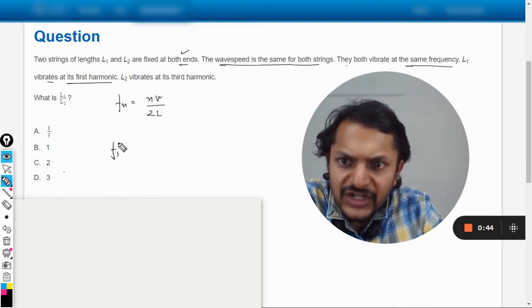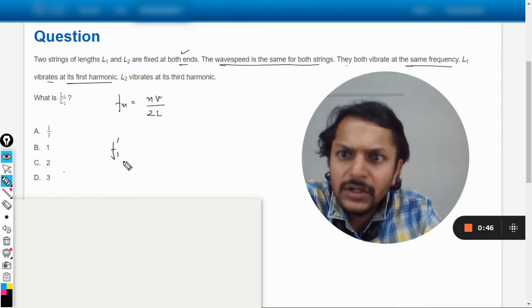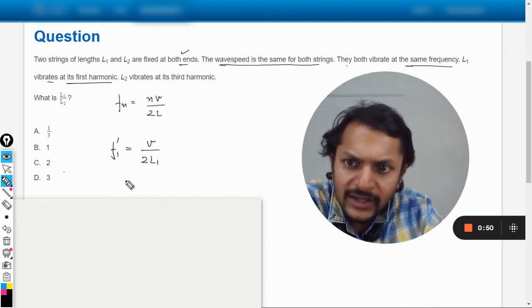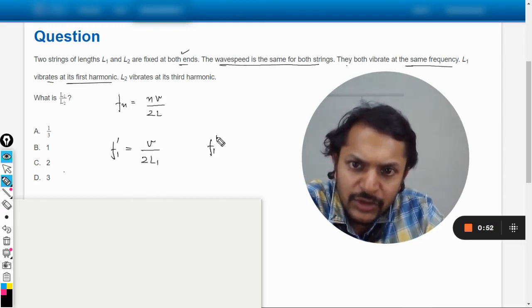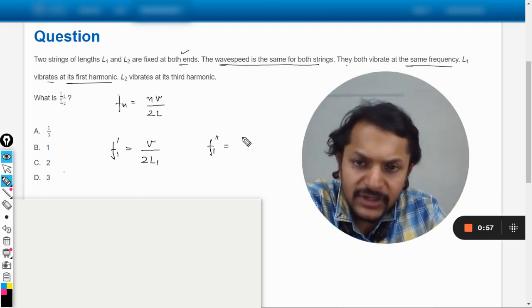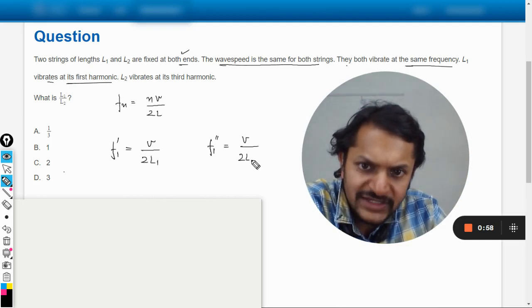So let us talk about the first harmonic for L1. It will be 1·v divided by 2L1. And what about the first harmonic of the second string, that is L2? It can be taken as v divided by twice of L2.